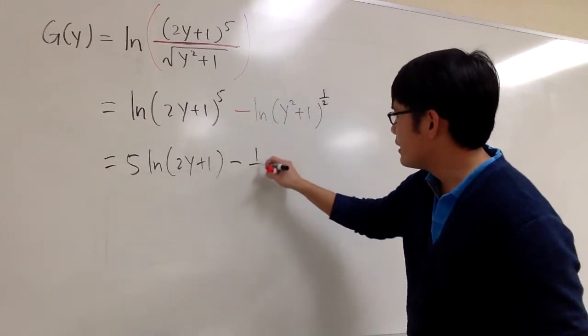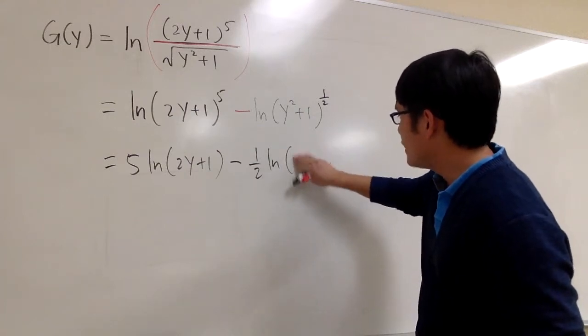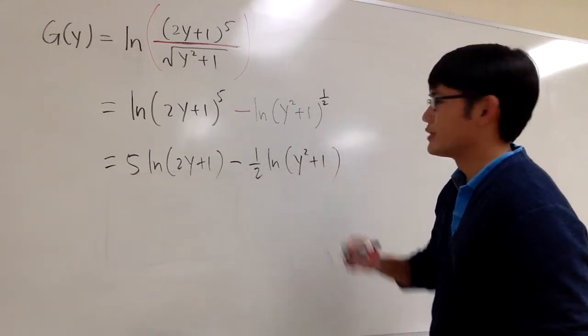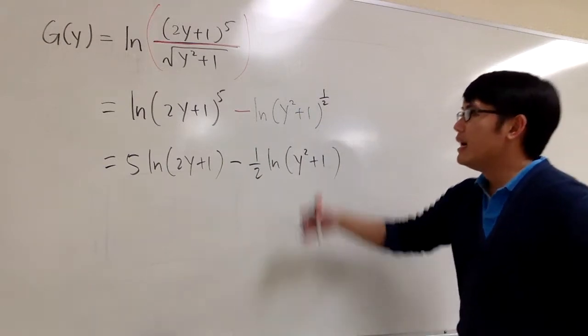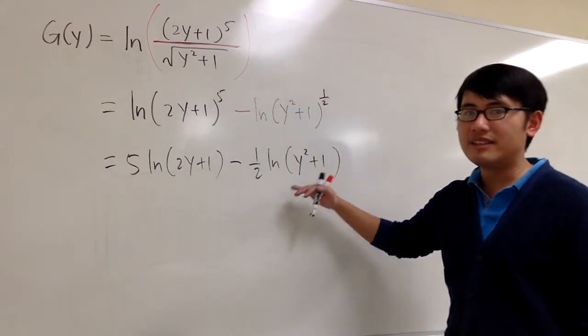Minus, bring the one-half to the front. And then you have the ln y squared plus 1. So we apply the log property as much as we can. And this is what we have.